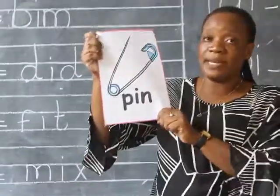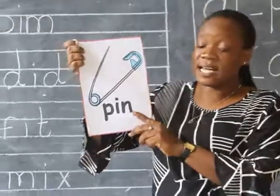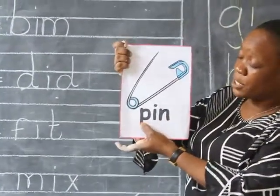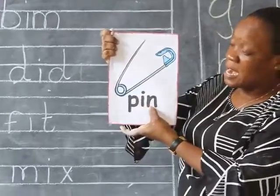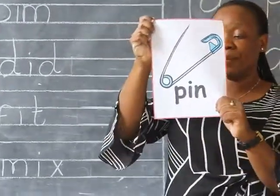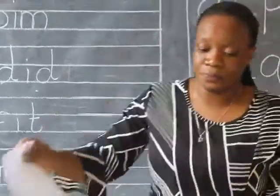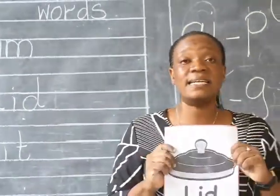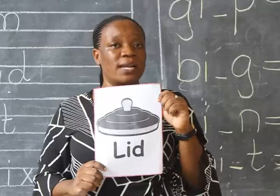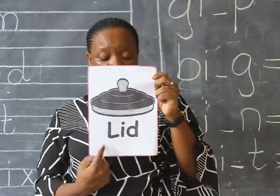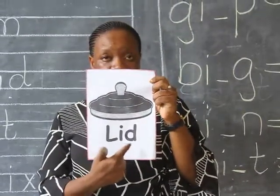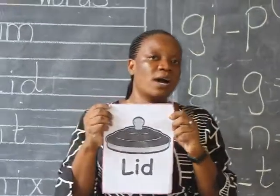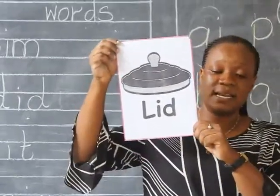Another flashcard is for pin. How do you read the word pin? You start with pu, i, n — pu, i, n — and you get the word pin. I also have another flashcard which you read as lid. And how do you read the word lid? You start with l, i, d — l, i, d — and you're going to get a word which you will read as lid.